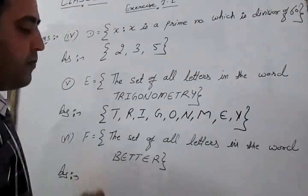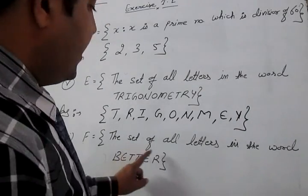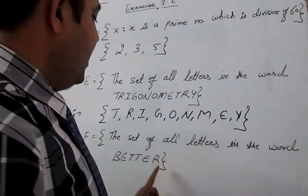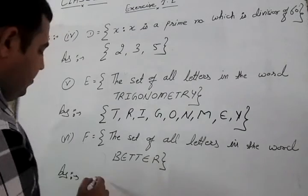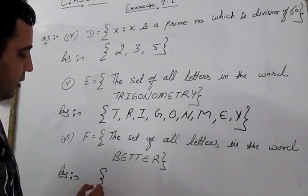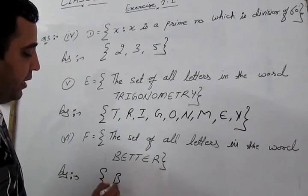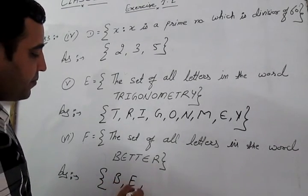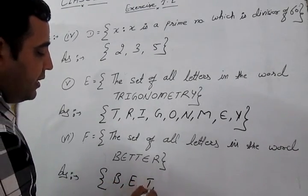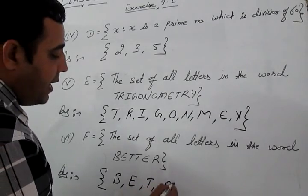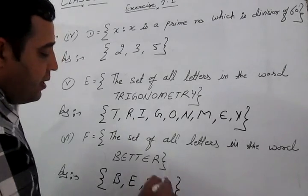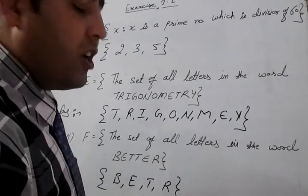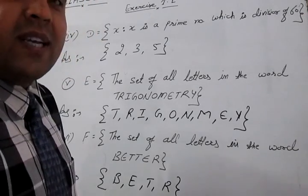Part F: the set of all letters in the word 'better'. The answer is {B, E, T, R}, since letters are never repeated in the roster form of a set.